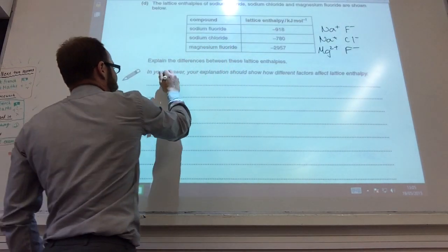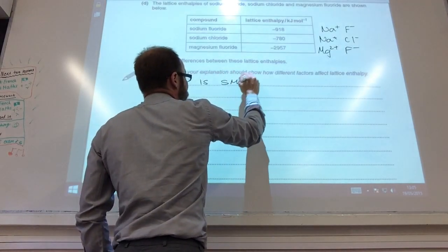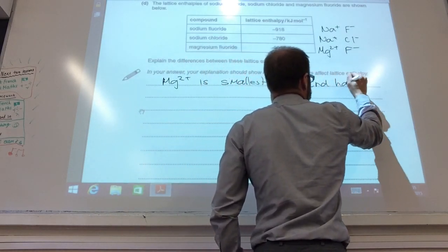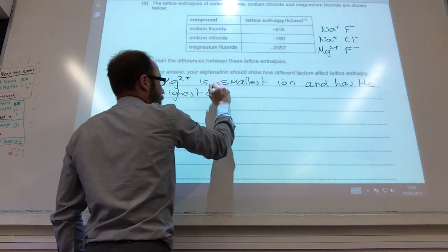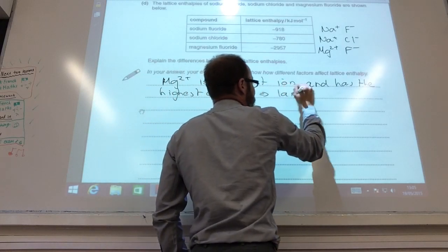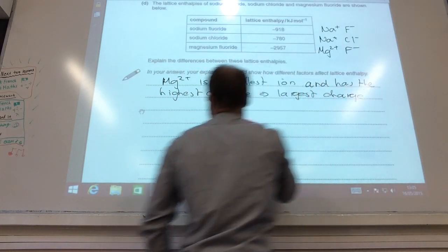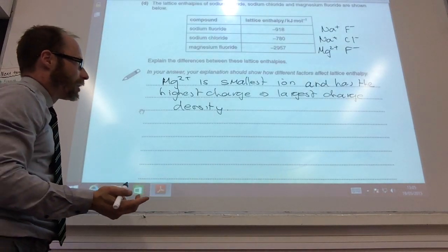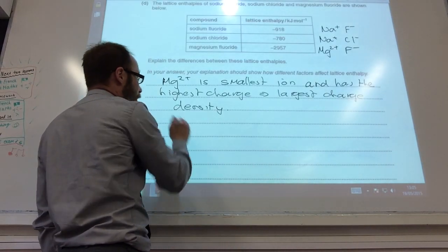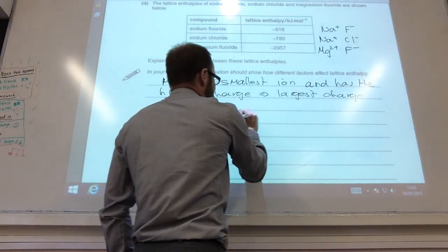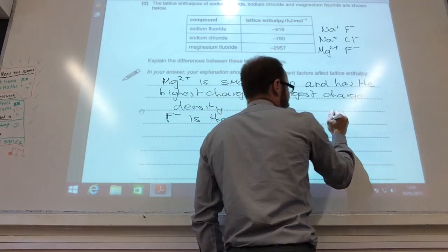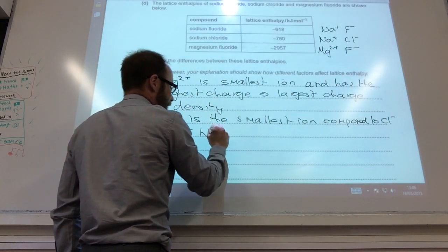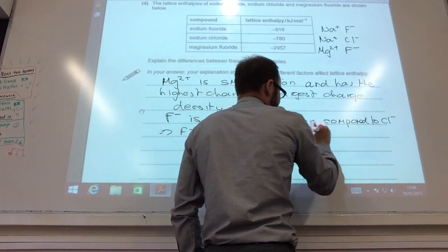First of all, Mg2+ is the smallest and has the highest charge, therefore is going to have the largest charge density, far more so than Na+ which is a larger ion and it's got a plus charge. In terms of fluoride or chloride, we know that F- is the smallest ion compared to Cl- and therefore F- has again the largest charge density.